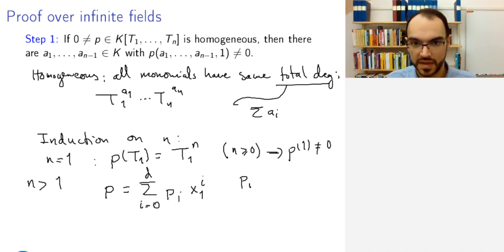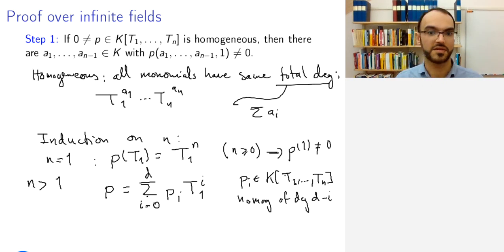So you write this in the powers of this X1. Then the Pi will be polynomials in K of, sorry, this X, i should be T, i. And so this is a polynomial in T2 up to Tn, homogeneous of degree d minus i. So that altogether is a homogeneous polynomial.